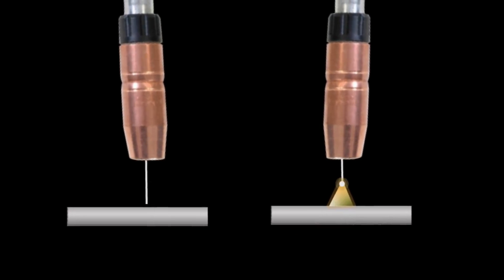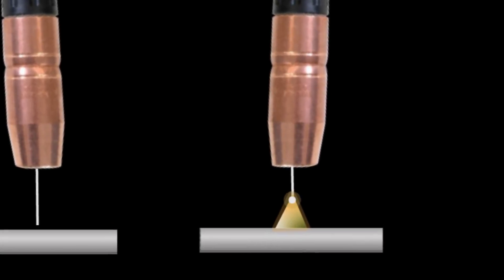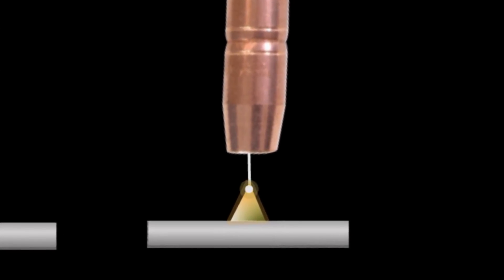Now in spray transfer, kind of the dumbed down version here on it is the arc and the energy is so powerful on that one that it kind of burns up midstream and vaporizes the wire into little tiny droplets, which gets propelled down into the work and deposits it down in there. So that's basically the process here.